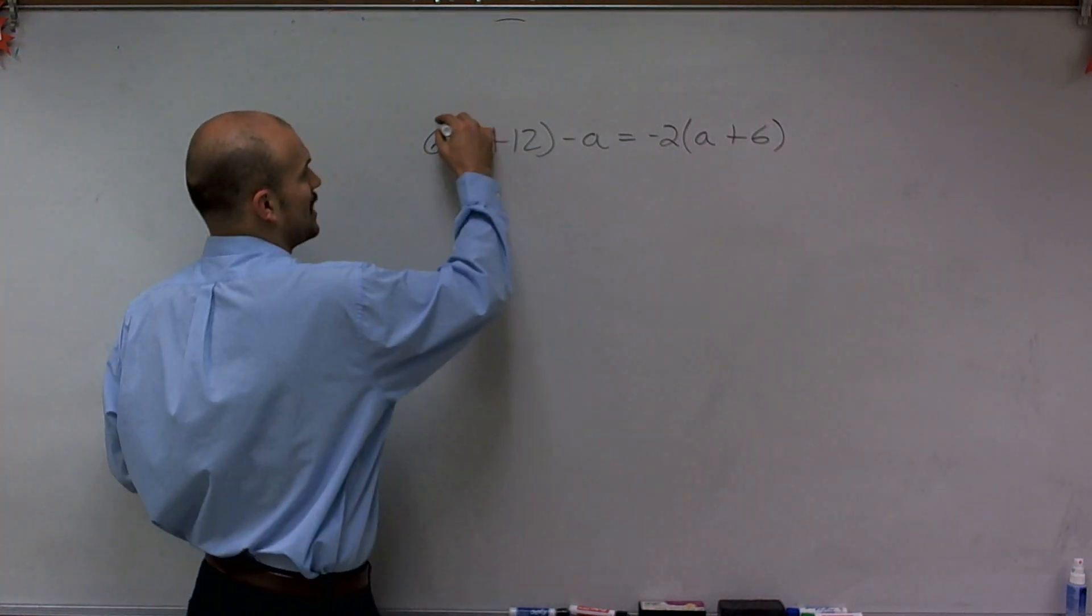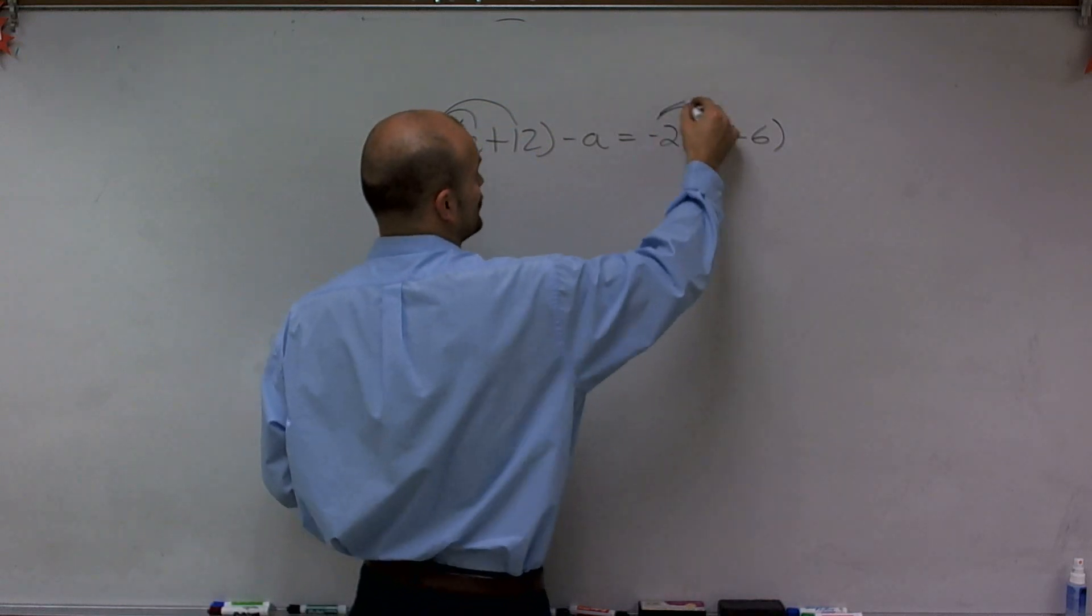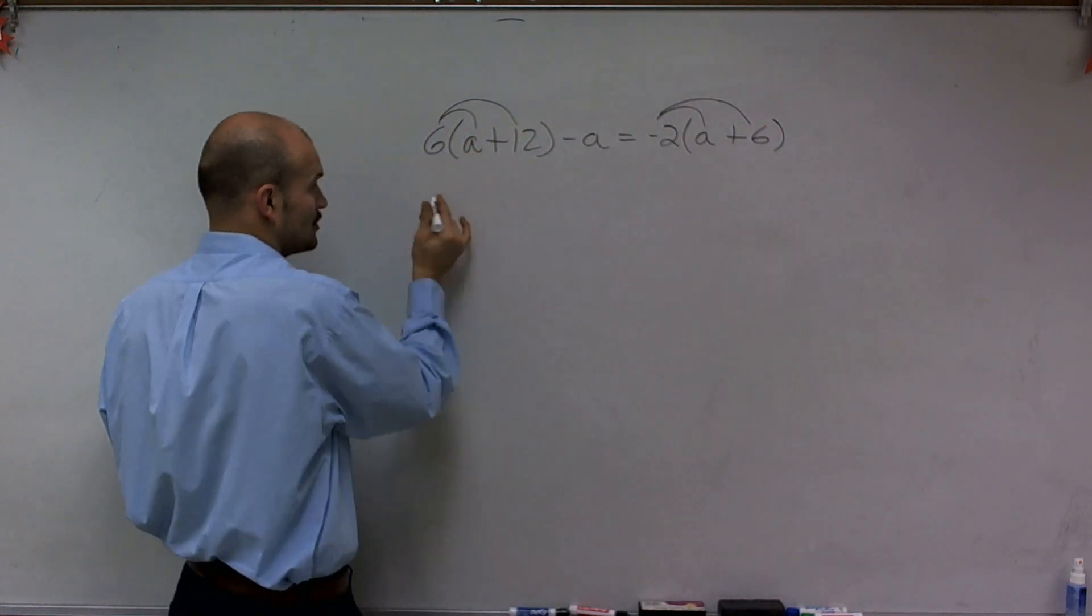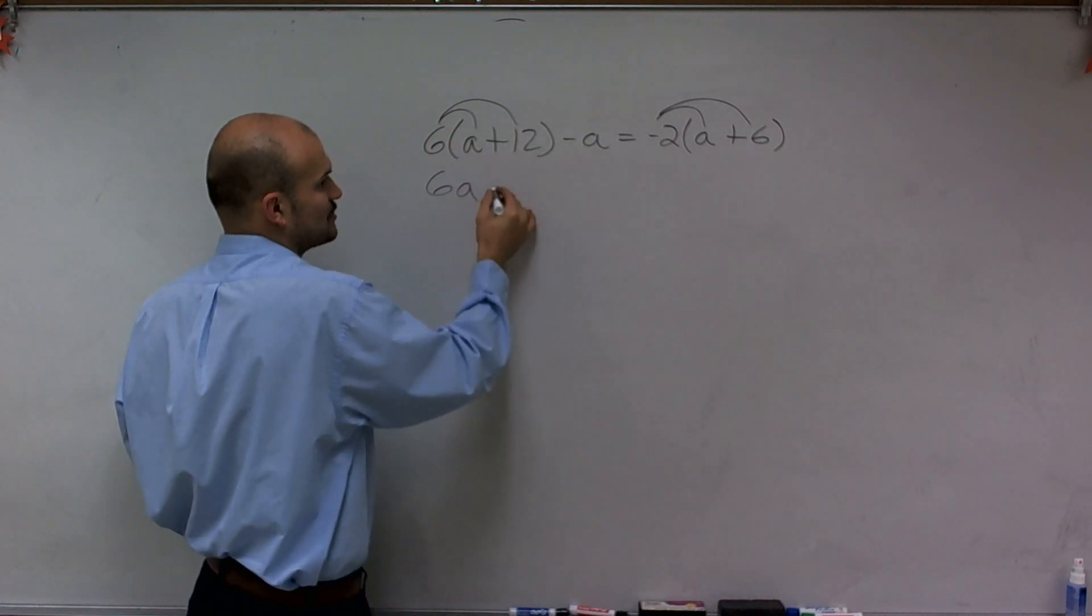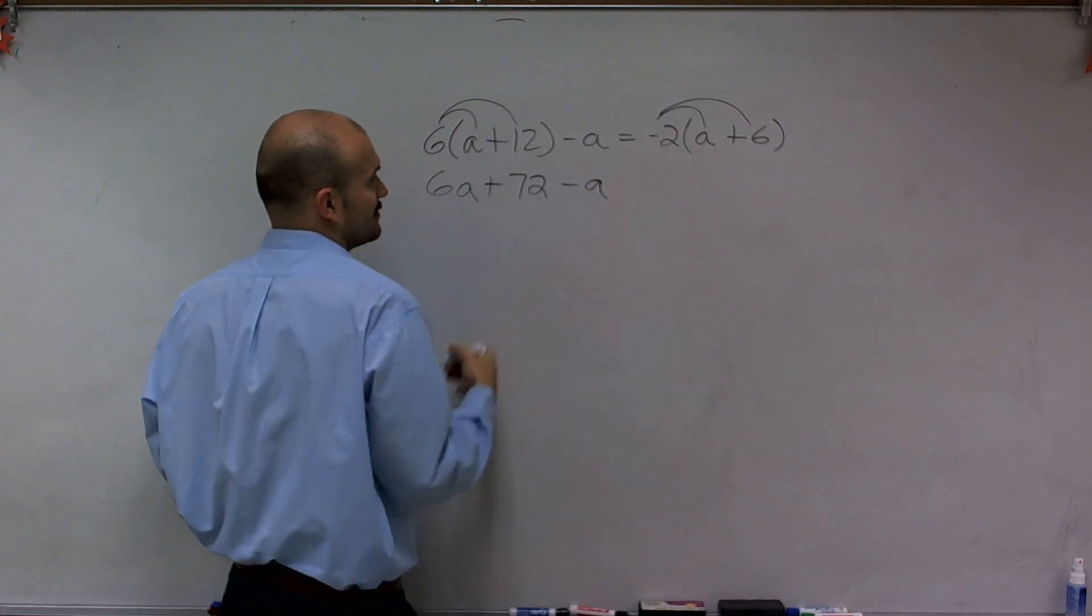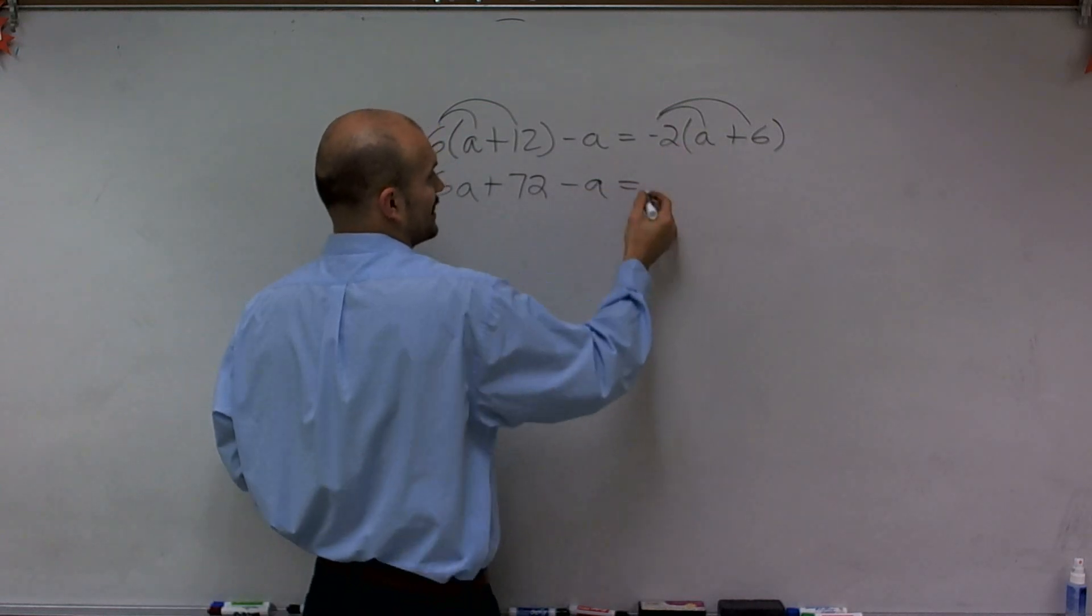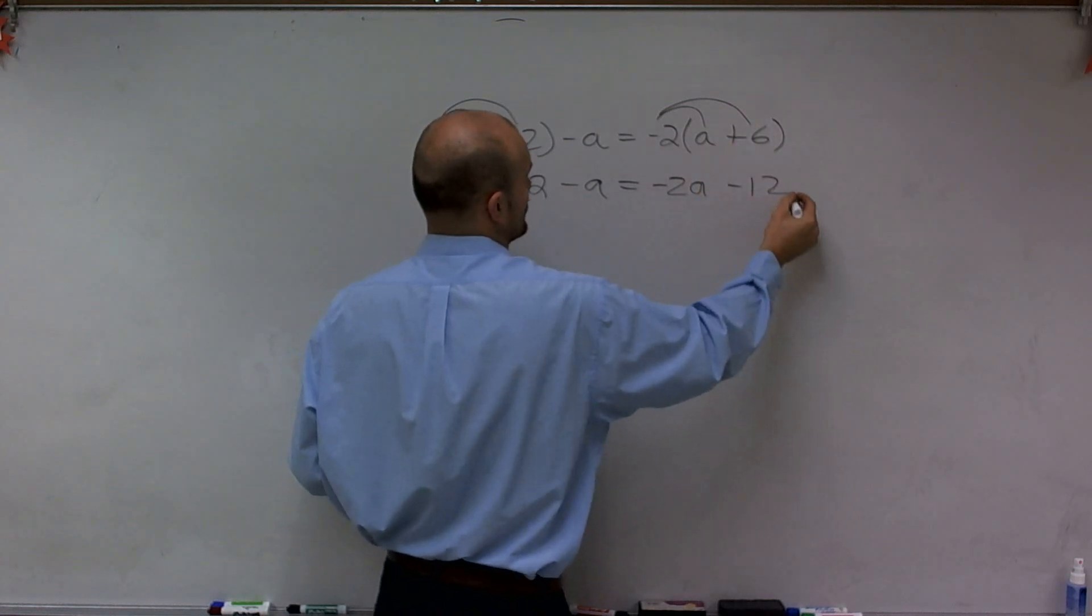Because I'm multiplying my six times this parentheses and the negative two times everything inside this parentheses. So by applying the distributive property, I'm going to multiply the six times both terms and I'm multiplying my negative two times both terms. So here you have six times a is six a. Six times 12 is going to be a positive 72. And then I have a negative a is still going to be there. Then I have negative two times a, which is a negative 2a. And then negative two times six, which is a negative 12.